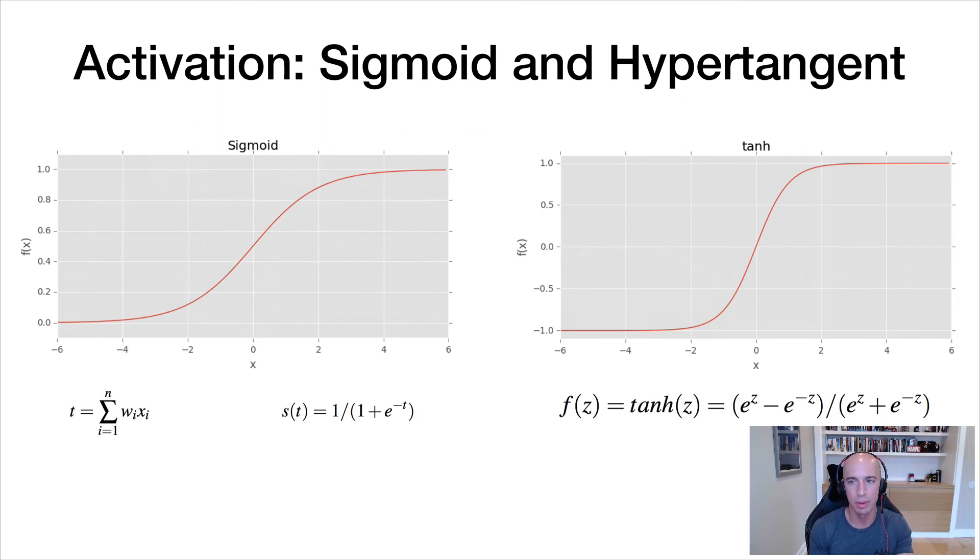Then we have the hyper tangent, which has an activation in the range negative one to one. We used hyper tangent a lot in the original early days of neural networks. We don't use it as much now, but you'll still see it in particular with generative adversarial networks. And we'll discuss why that is once we get to GANs. But at this point, I'm just trying to expose you to different activation functions that have been used.